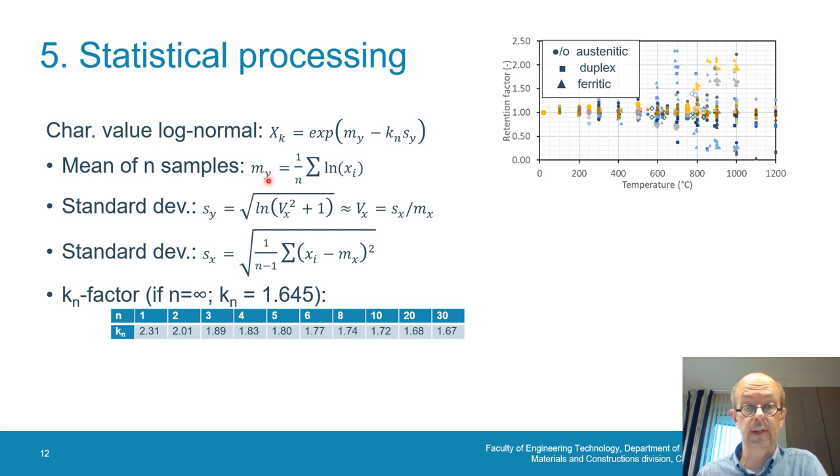The subscript y means that a log-normal value is behind it. So we've got the mi value, the mean value of i, and that is the mean value of the log-normal values of the original x values. For standard deviation, a simplification can be made as long as vx is smaller than about 0.2, following Eurocode Annex D, but even till 0.4 this approximation is quite close to reality. Finally, we arrive to this kn factor, and this kn factor is given in a table copied from Eurocode 0 Annex D. It should be noted that for an n value which is infinite, the kn becomes 1.64.